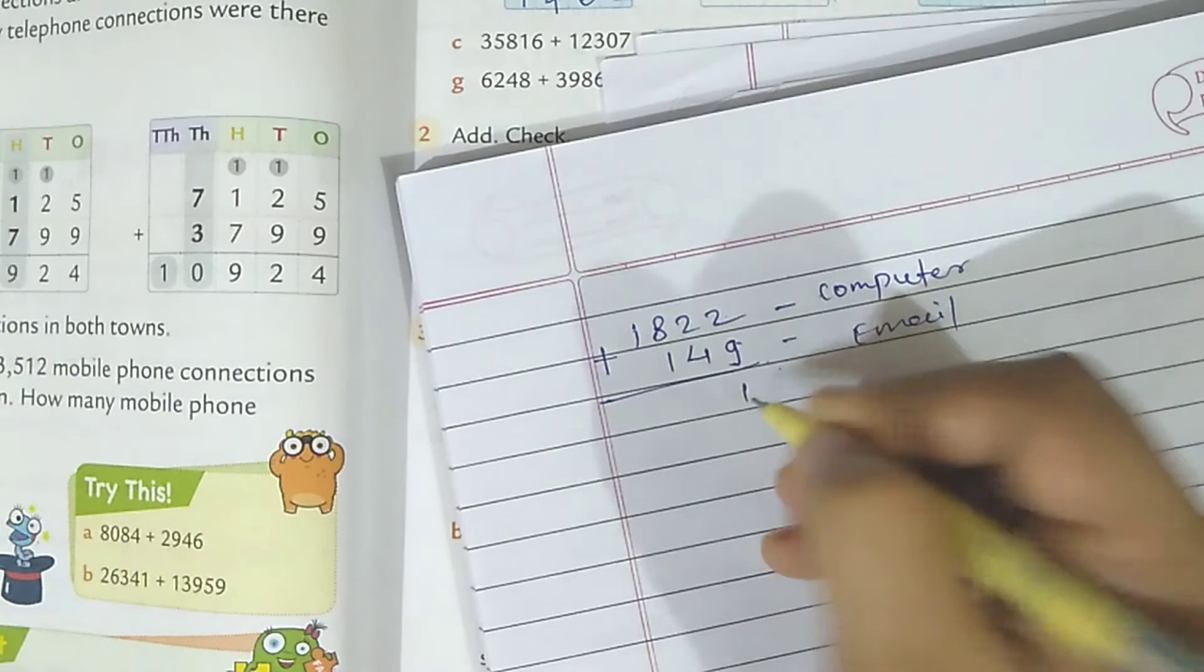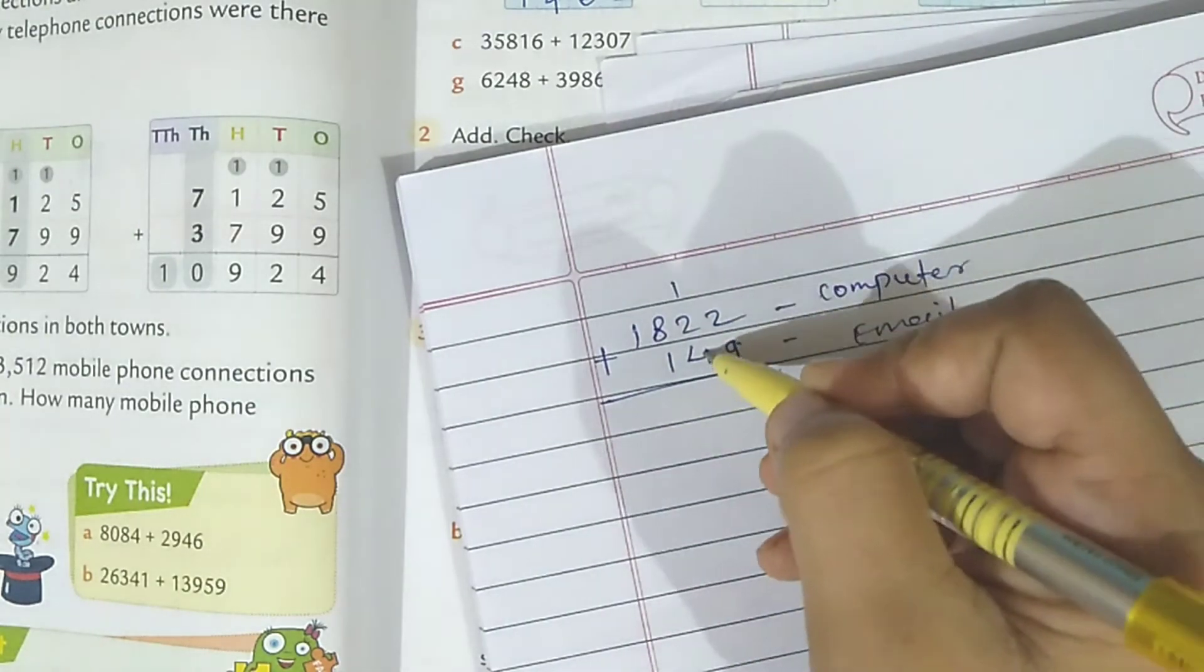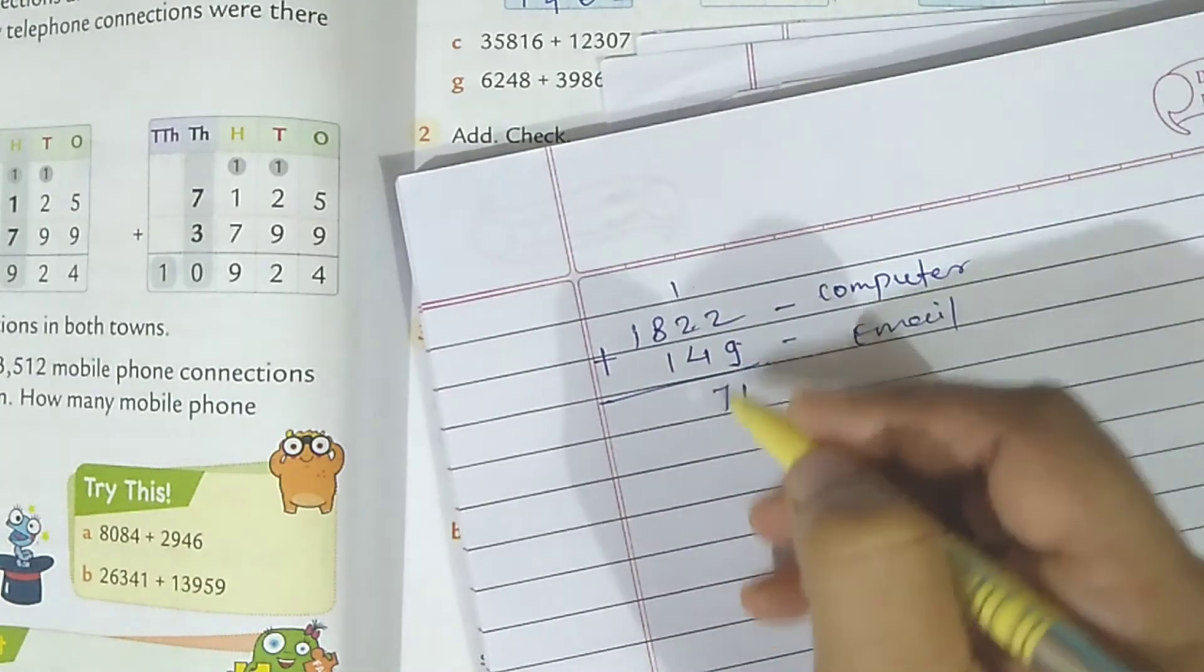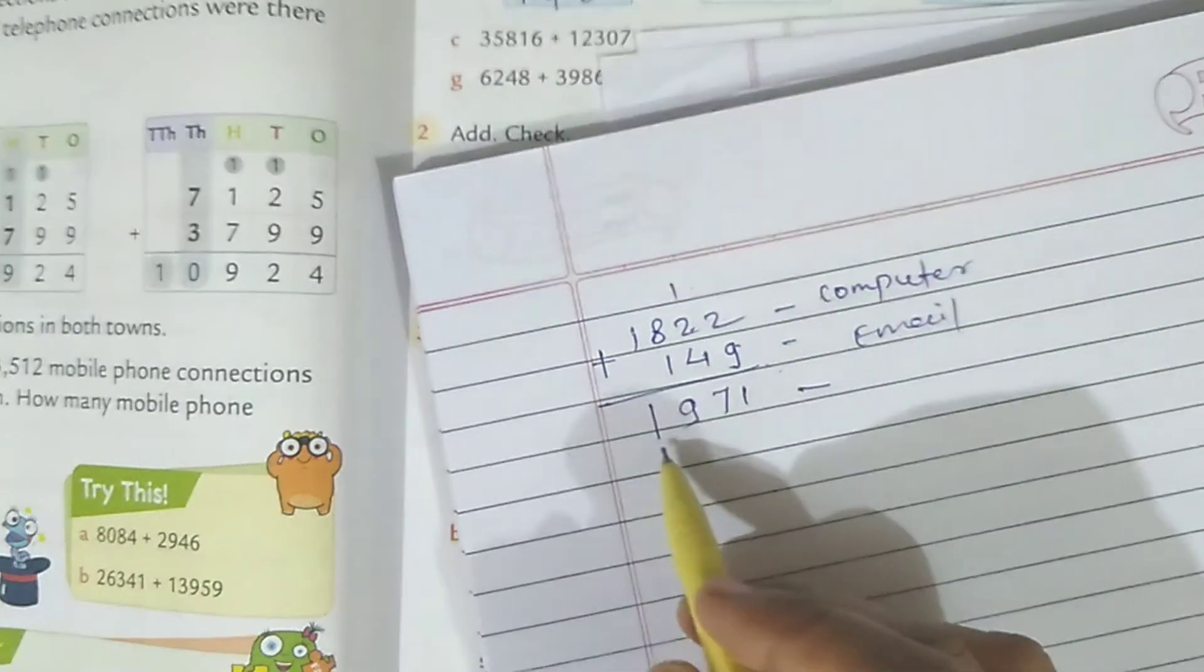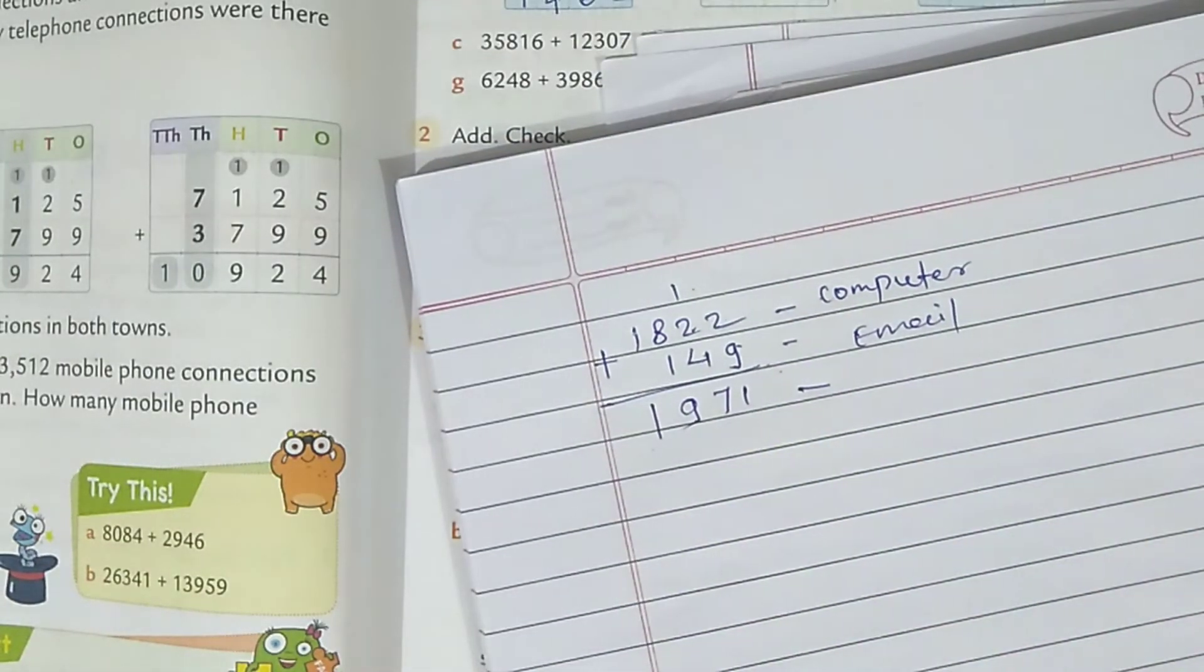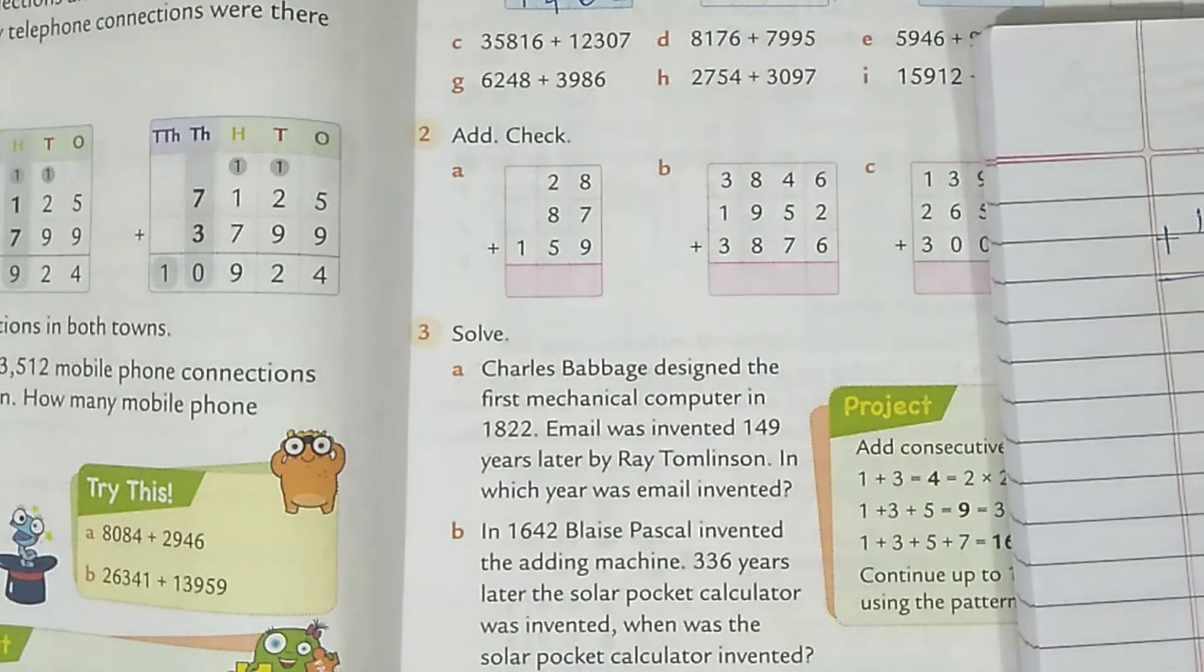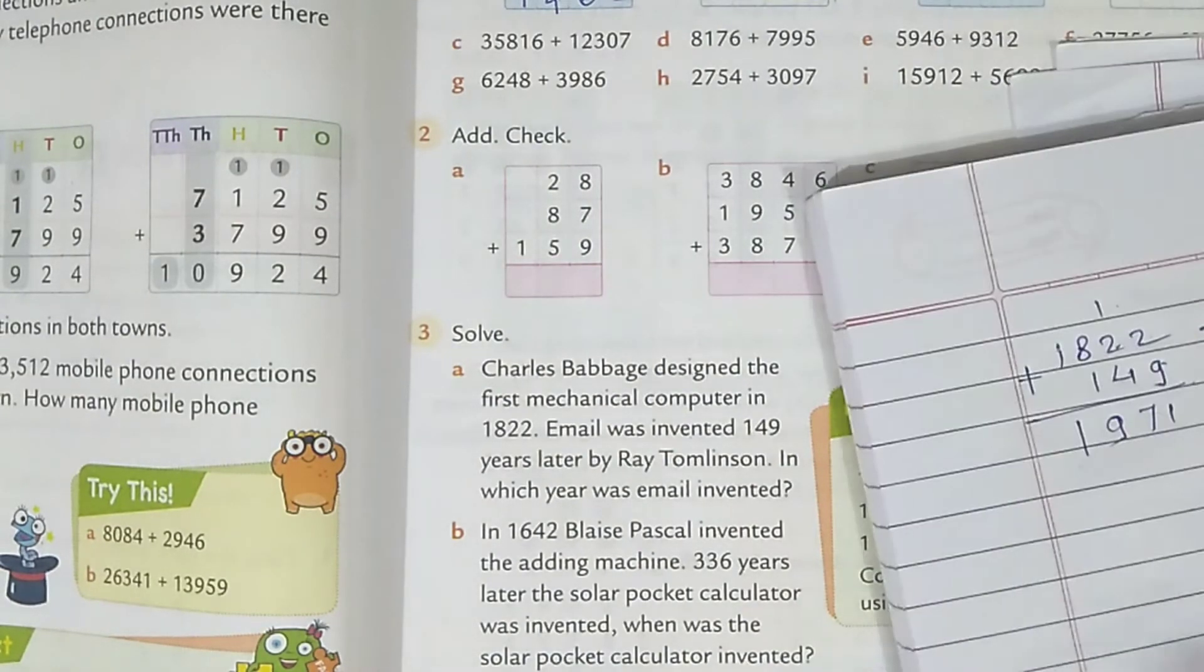9 plus 2 is 11, 1 carry. 4 plus 2 is 6, 6 plus 1 is 7. 8 plus 1 is 9, and 1. Means in 1971 email was invented. Okay, so you understand? Next.